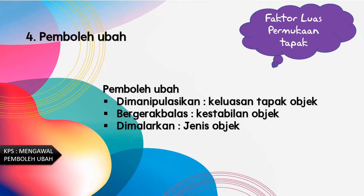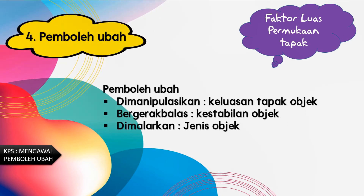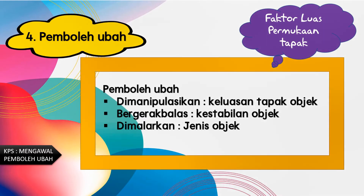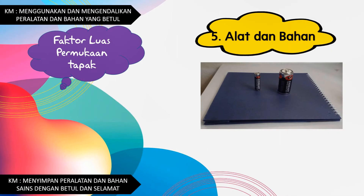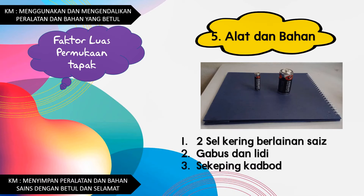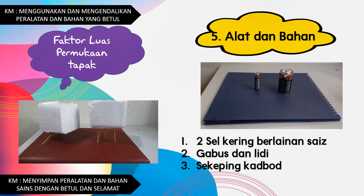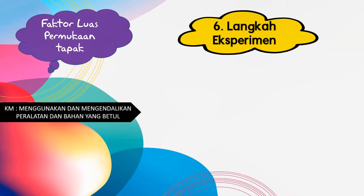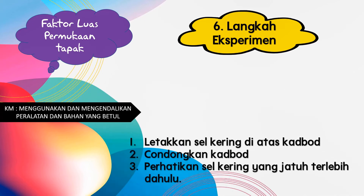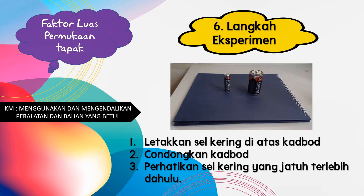Pemboleh ubah dalam eksperimen kedua: dimanipulasikan ialah keluasan tapak objek, bergerak balas ialah kestabilan objek, dan dimalarkan ialah jenis objek. Alat dan bahan yang digunakan adalah dua sel kering berlainan saiz — satu bersaiz besar, satu lagi kecil — serta gabus, lidi dan sekeping cardboard. Langkah eksperimen: letakkan sel kering di atas cardboard, condongkan cardboard, perhatikan sel kering yang jatuh terlebih dahulu.